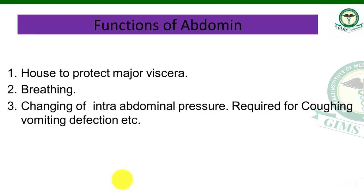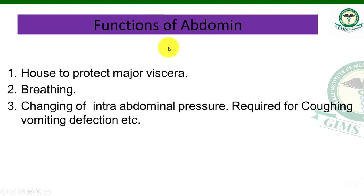What is the function of the abdomen? Basically, the abdomen's role is to house and protect the major viscera — the internal organs. Just as a house protects from outsiders, the abdomen protects all internal organs from the outside. It also helps in breathing — the diaphragm is part of the abdominal cavity and is related to the breathing process.